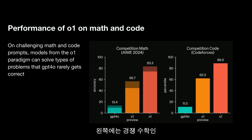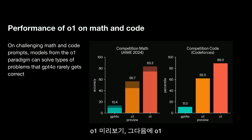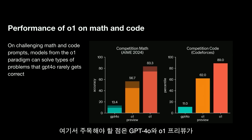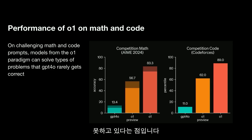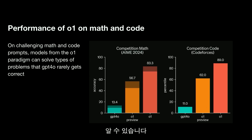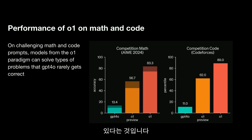In these bar charts, we have on the left IMO, which is competition math, and on the right, Codeforces. There are three bars: GPT-4o, O1 preview, and O1. GPT-4o and O1 preview are barely solving a few questions in these benchmarks. O1 preview can solve more than half, and O1 can solve the majority of problems in this dataset. So there's a subset of tasks where GPT-4o is really struggling, and O1 can solve the majority.